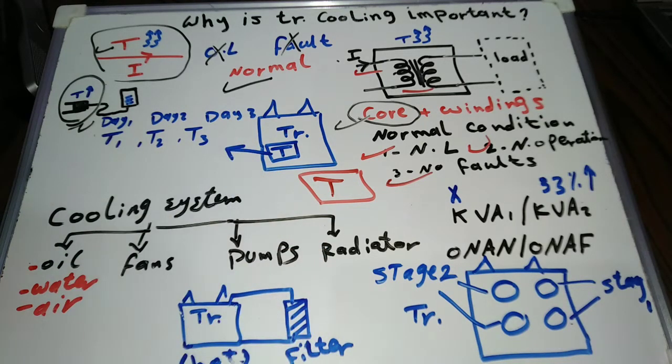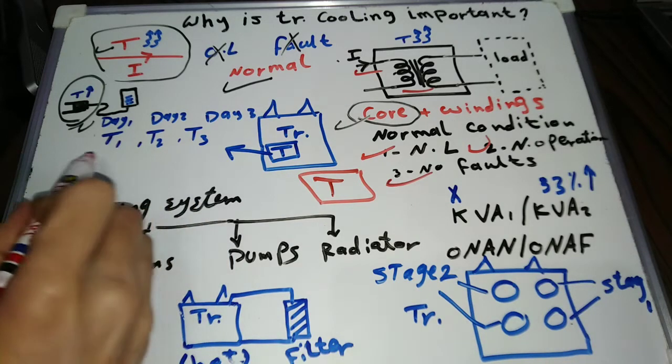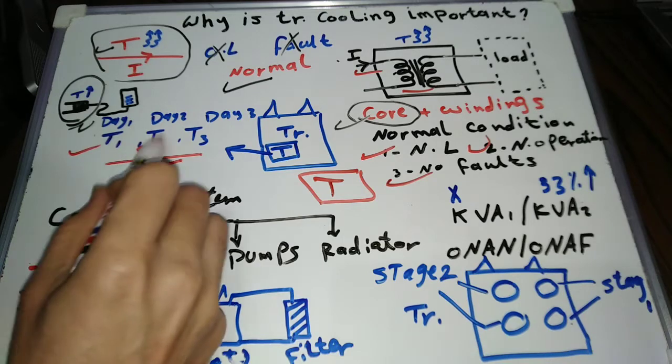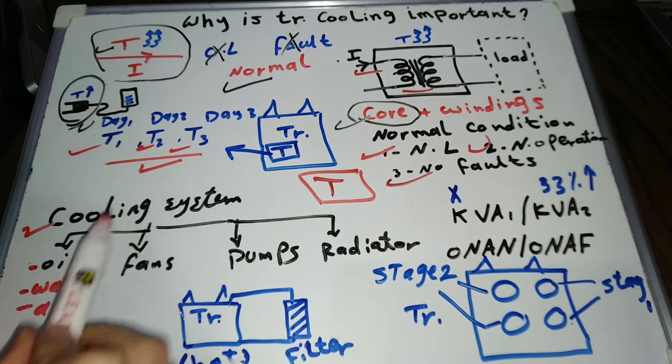Each transformer nameplate has its temperature rising limits. We should keep an eye on the transformer temperature and make sure it is in the limits. Transformer cooling system is the only way to control its temperature rise.